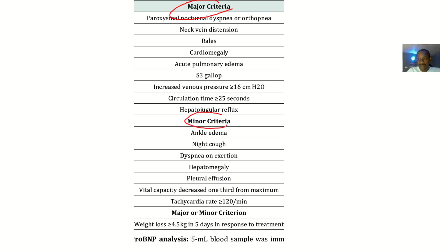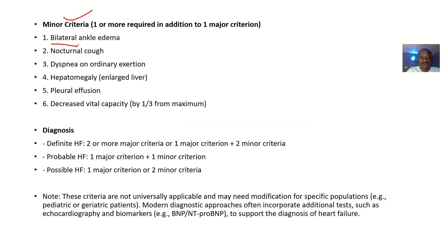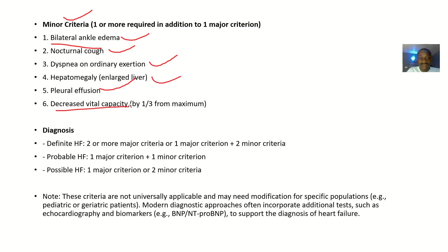Moving to the minor criterias: there could be bilateral ankle edema, nocturnal cough, dyspnea on ordinary exertion, hepatomegaly — that's an enlarged liver — pleural effusion, and decreased vital capacity. For the minor criterias, the patient is expected to have one or more of these for you to confirm the condition.